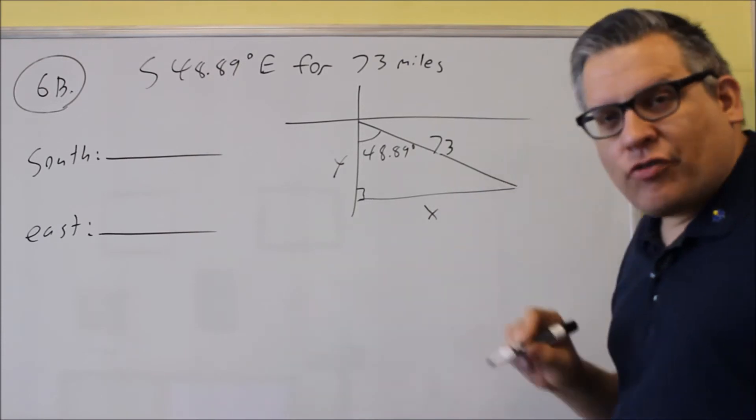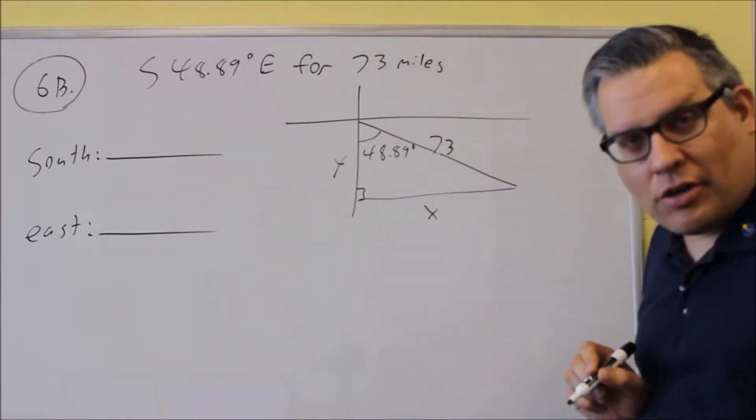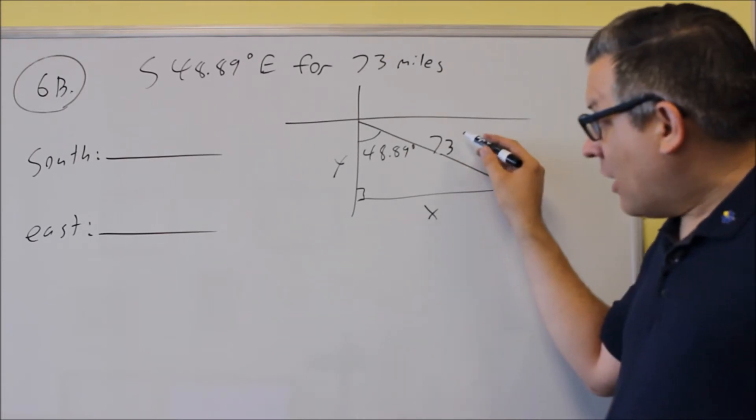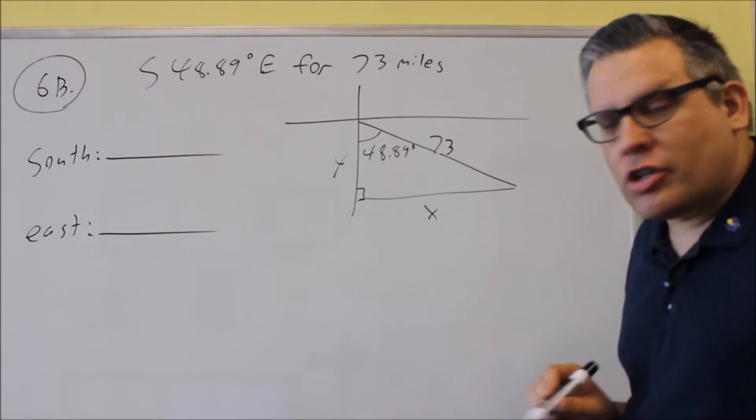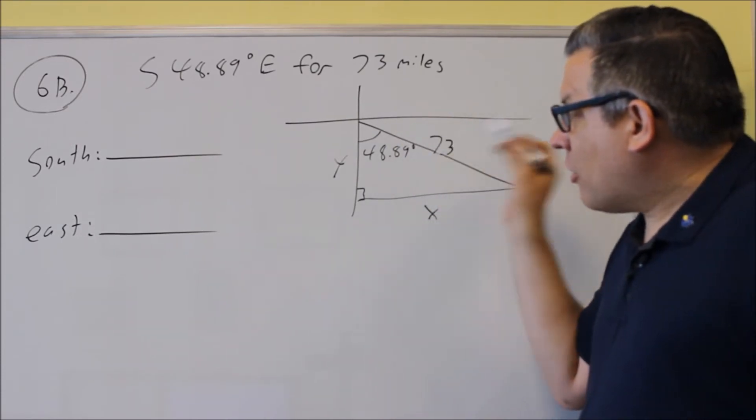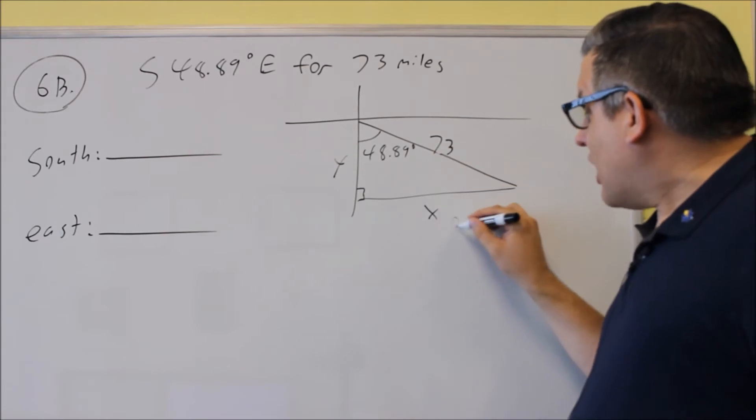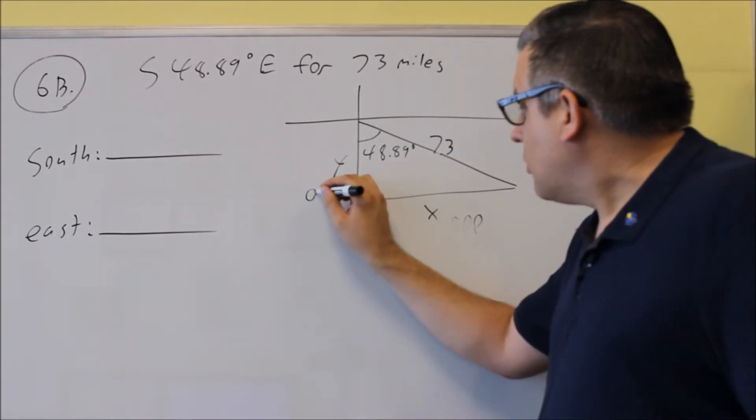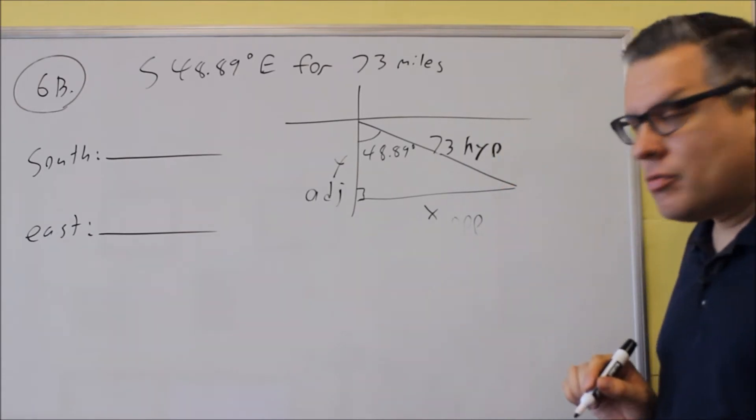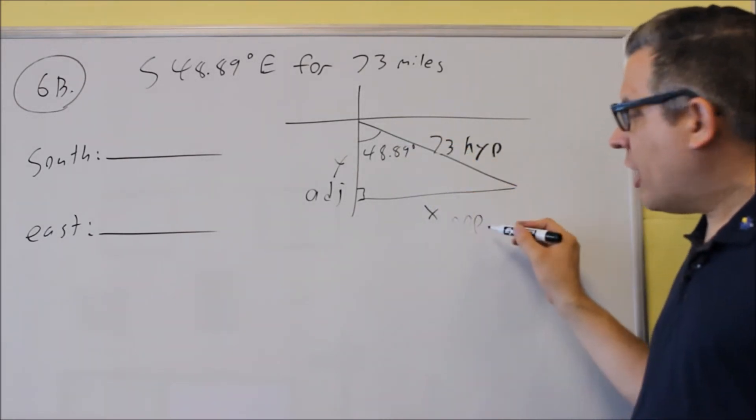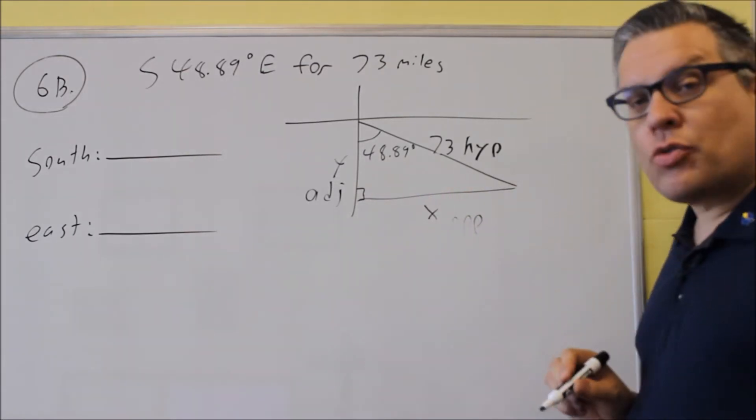We're going to set up a trig function that relates the side that we're given. So we have 73, that's a hypotenuse, and a side that we're trying to find, that's going to be the y. So we want to find a trig function that relates the, okay, now be careful when we label this. In this case, this side is going to be the opposite. This is adjacent, and this is hypotenuse. So opposite, 48.89, x is your opposite, the y is your adjacent, 73 is hypotenuse.